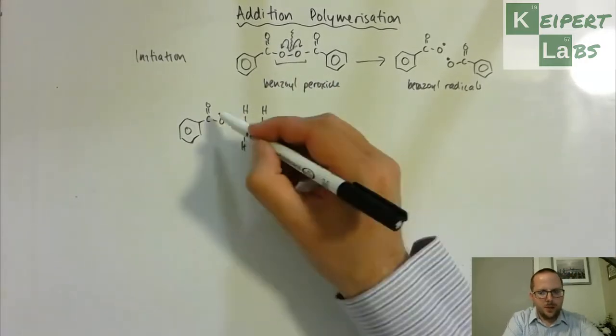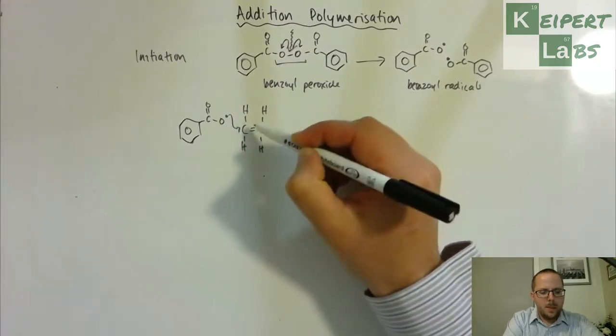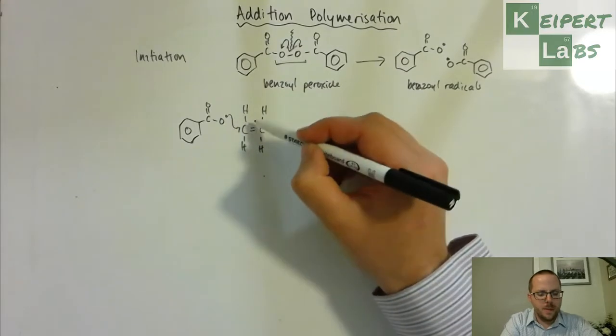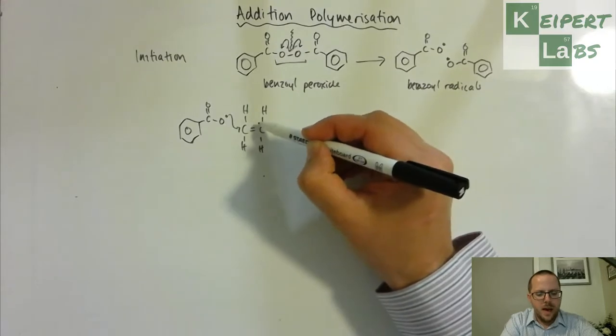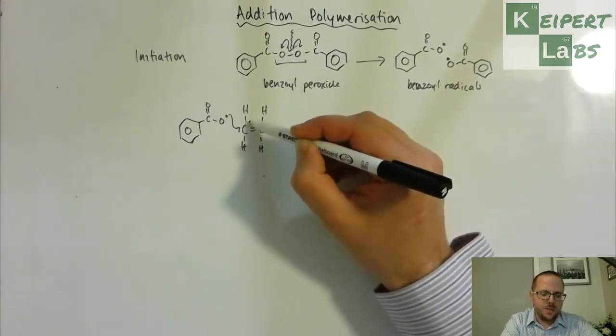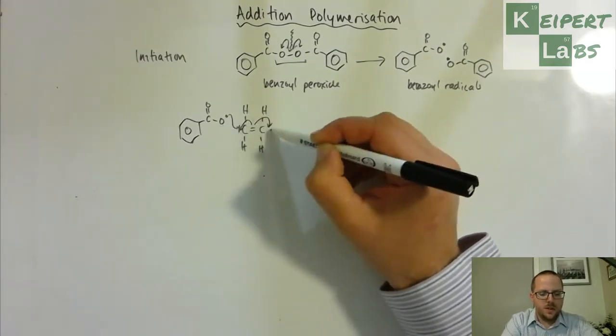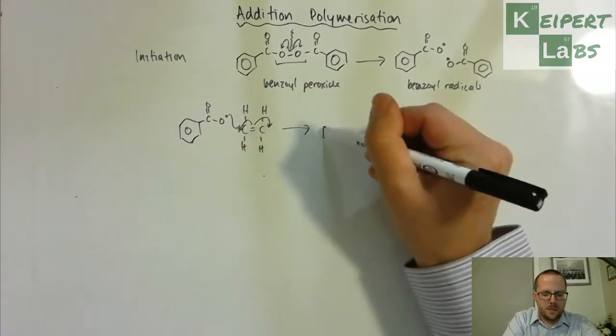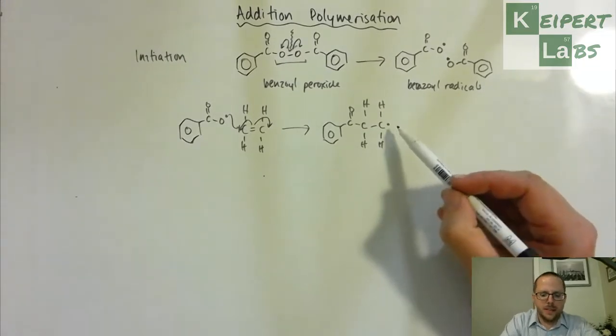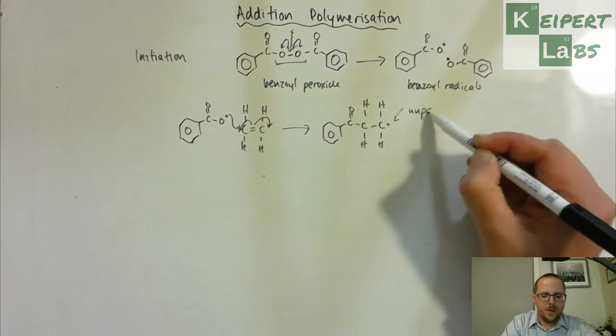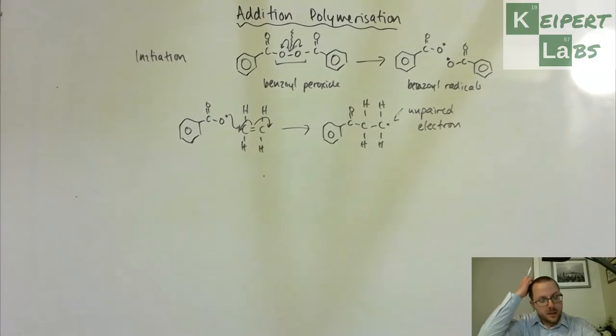And what that does is that this unpaired electron attacks or approaches this carbon, but because this carbon cannot have more than four covalent bonds what happens is that one of the double bonds break, or the second bond of the double bond breaks, and one of those electrons is involved in connecting to this oxygen and then the other electron goes onto the other side of this carbon here. And so we have an unpaired electron that is existing now on this far carbon on the one that has now become connected onto this radical.